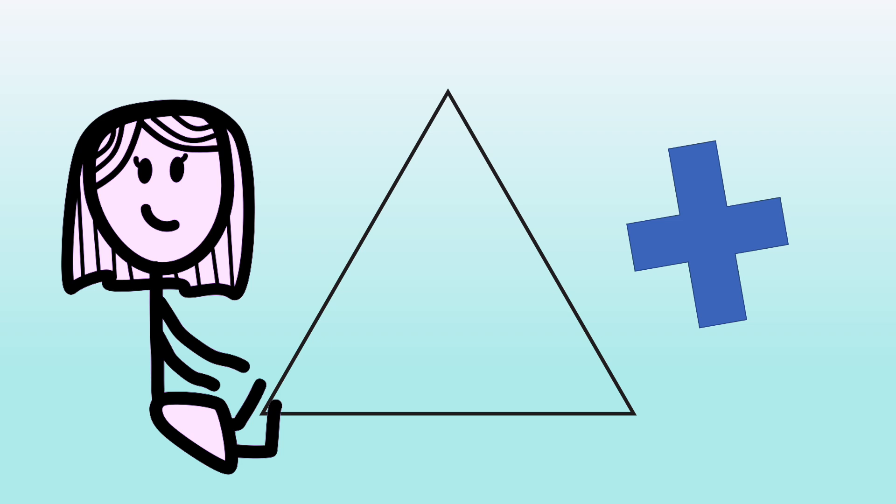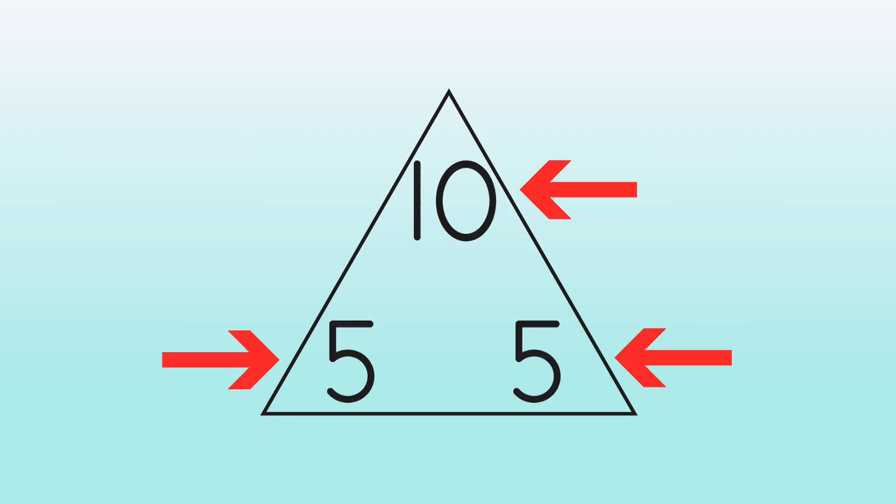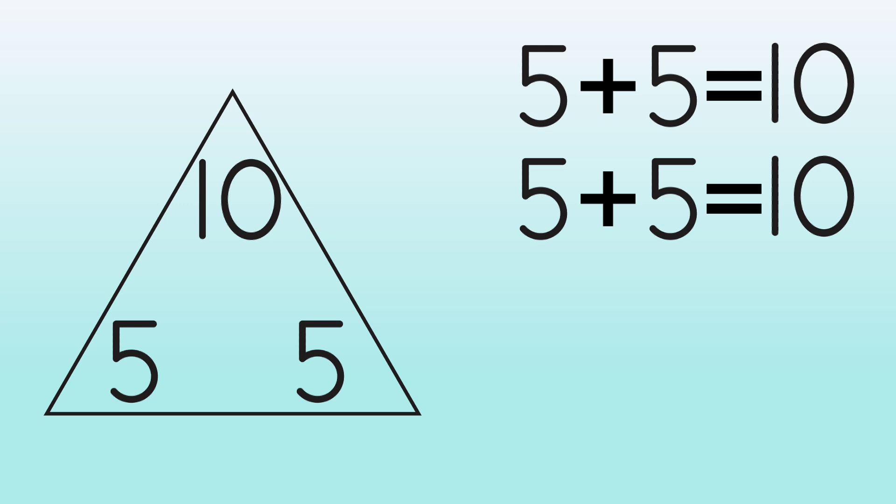She decided to do addition first. Start at the bottom, go over and up. 5 plus 5 equals 10. She started at the other side and did the same thing. Since both facts are the same, we will only list it once.